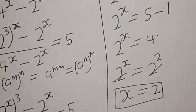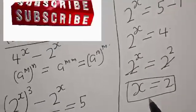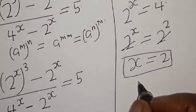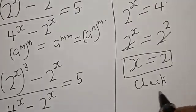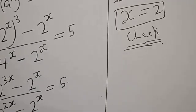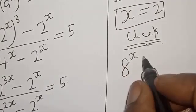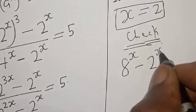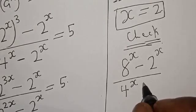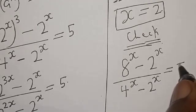Our final answer for this given equation is x is equal to 2. Let's check to confirm if our answer is right or wrong. We have the original equation: 8 raised to the power x minus 2 raised to the power x, divided by 4 raised to the power x minus 2 raised to the power x, must be equal to 5.